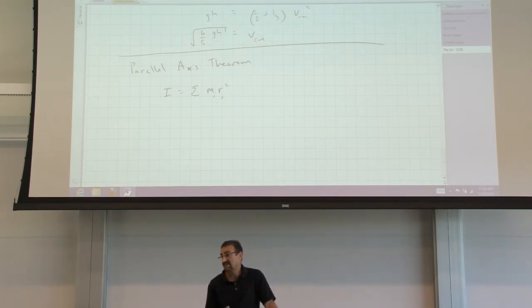So if we're dealing with point masses, we just add them up, figure out what I is for each point mass, add them up, and that's what we use. If you're dealing with a solid object,